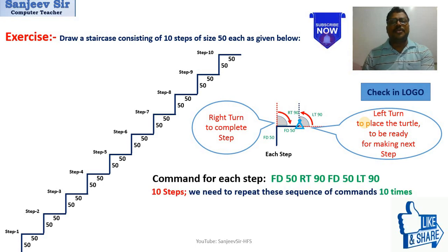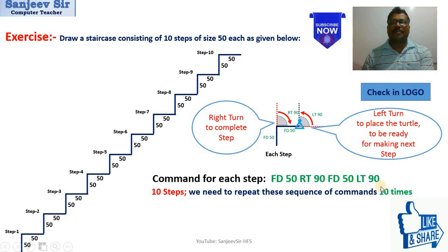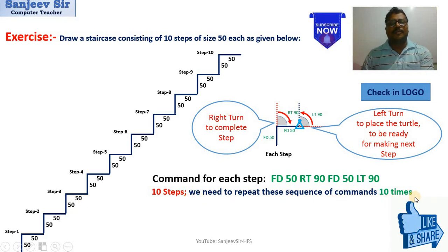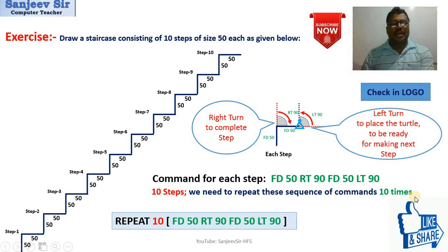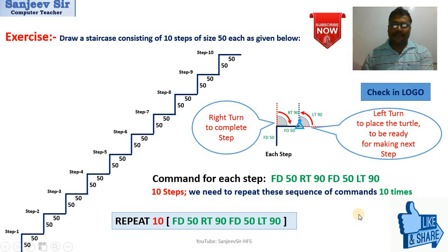The turtle rotates and completes one step, then gets into position for the next step. This repeats ten times. The command is: FD 50 RT 90 FD 50 LT 90. For ten steps, we repeat this sequence ten times, so the full command is: repeat 10 [FD 50 RT 90 FD 50 LT 90].